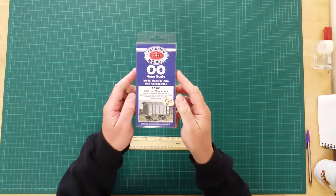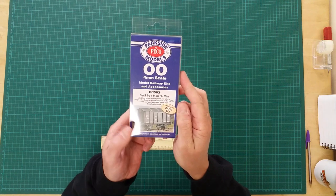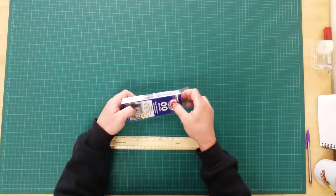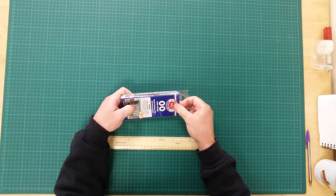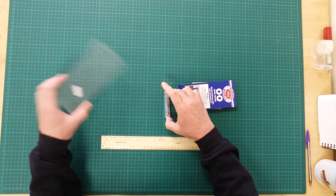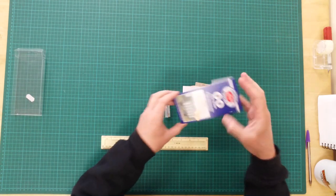This is the PC563GWR Iron Mink A van by Parkside models in WHO gauge. This is a plastic kit that will require assembly and can be painted as desired.